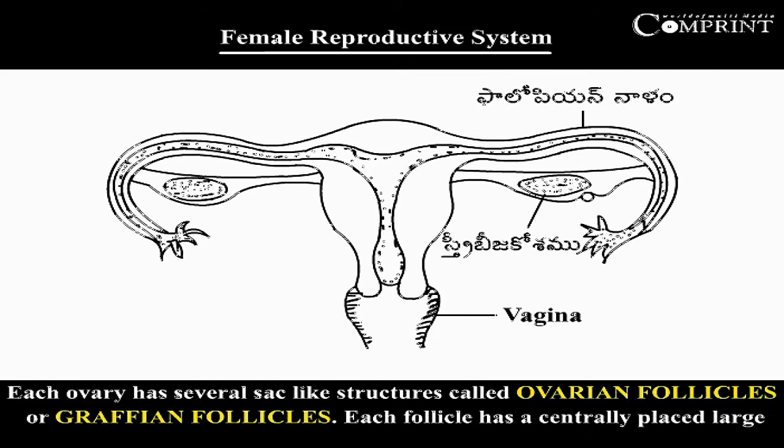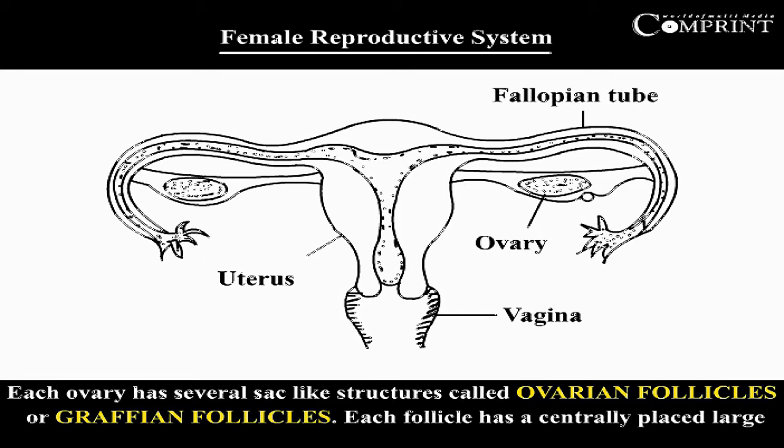Each ovary has several sac-like structures called ovarian follicles or Graafian follicles. Each follicle has a centrally placed large cell called the ovum.